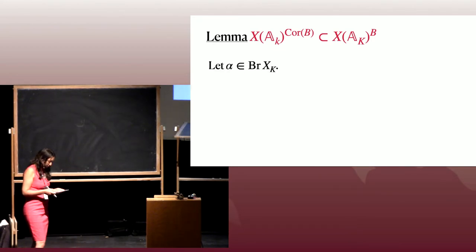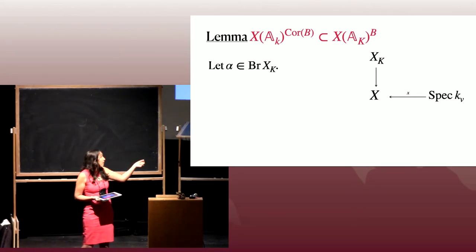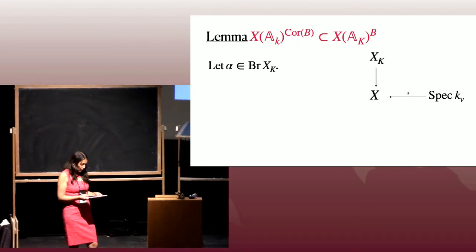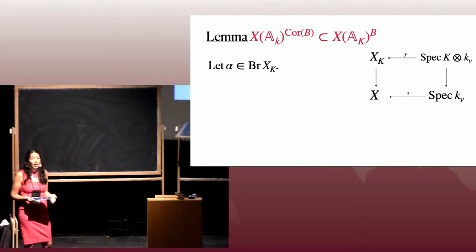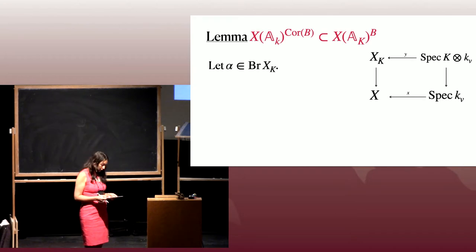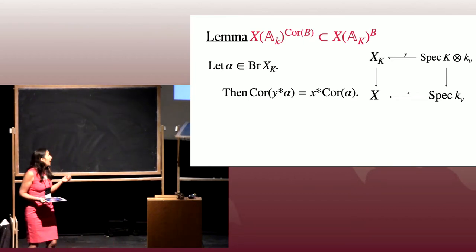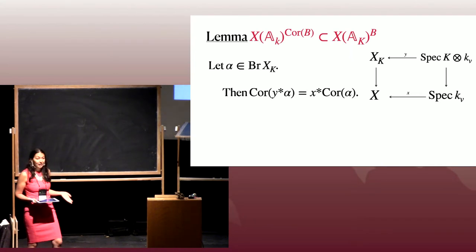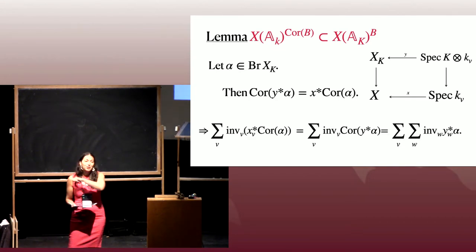Let me explain this lemma because it is very nicely functorial. If you have alpha in the Brauer group of k and a local point at a particular place v, you can pull back that map and view it as giving a point over every place lying over v. It's a purely functorial statement — found in the recent Brauer group book of Colliot-Thélène and Skorobogatov — that if you pull back along x the corestriction of alpha, that's the same as first pulling back along y and then co-restricting down. You just trace through the pairing and everything works out.